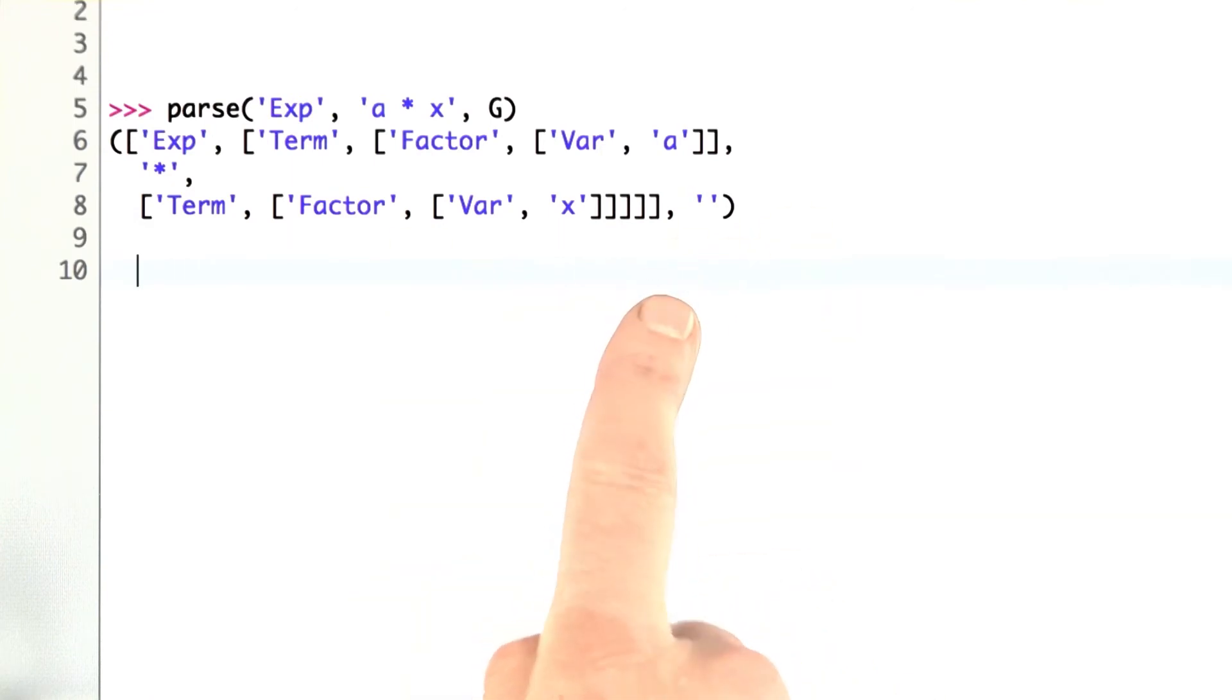It looks kind of complicated. All it's really saying is that we have an a in the first element, then the multiply sign, and then an x in the third element, and there's no remainder, we parse the whole string. That's what it says, but there's all these intermediate parts here because that's the way the grammar is defined. I should say here that this is a tree comma remainder result.